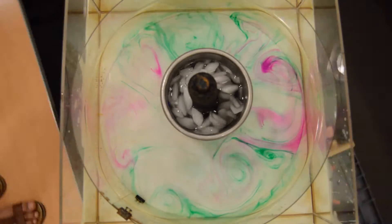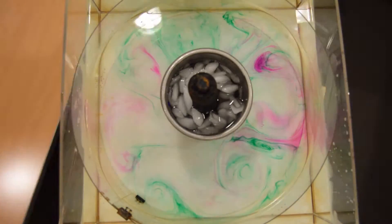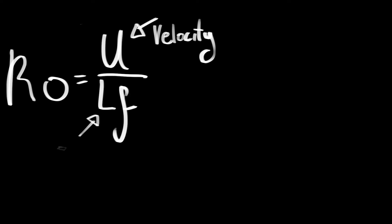So why? Well, the difference between our tank and the river is the Rossby number. This is the ratio of inertial forces to the Coriolis force, and it's defined as U over LF. For a system like the Earth, the U is the characteristic velocity, L is the length scale, and F is the Coriolis frequency, which is the angular frequency and the sine of the latitude.